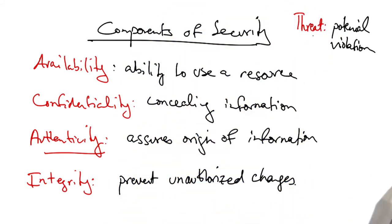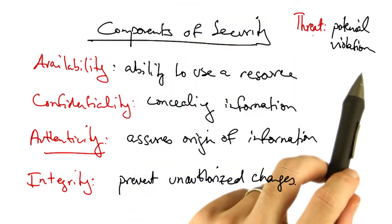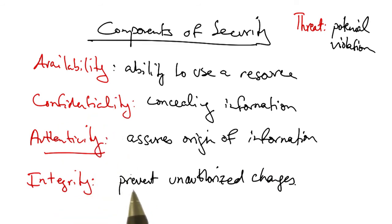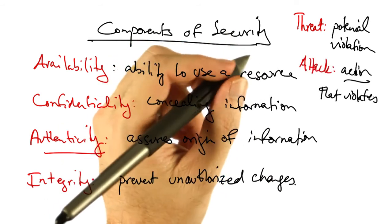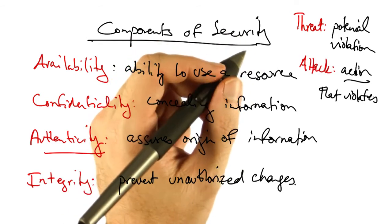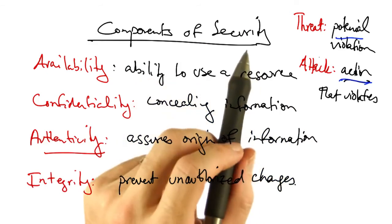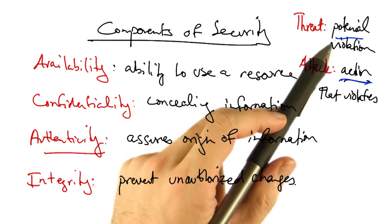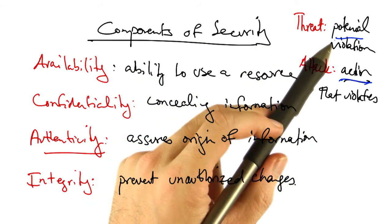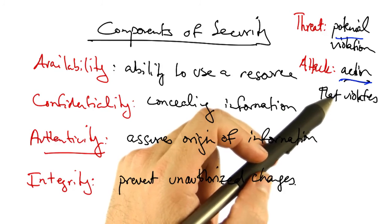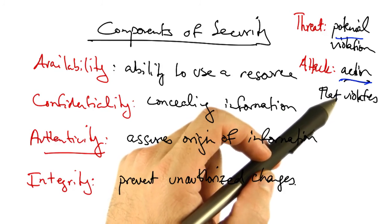Now a security threat is anything that might potentially cause a violation of one of these properties. An attack, on the other hand, is an action that results in the violation of one of these security properties. So the difference between a threat and an attack is simply the difference between a violation that could potentially occur versus an action that actually results in a violation.